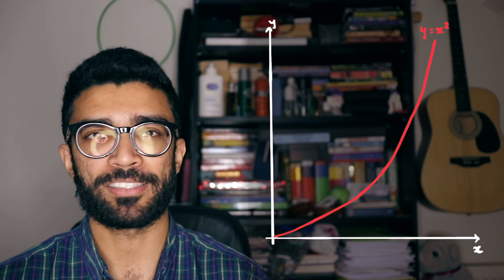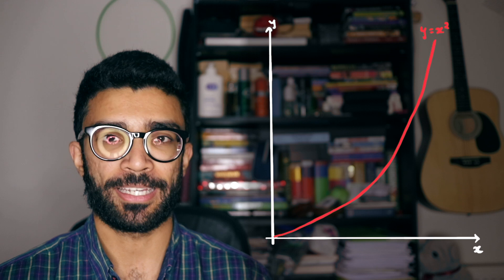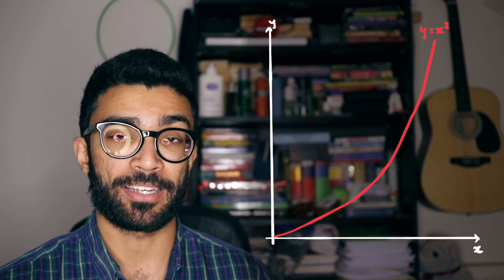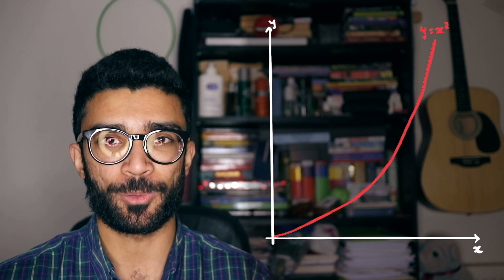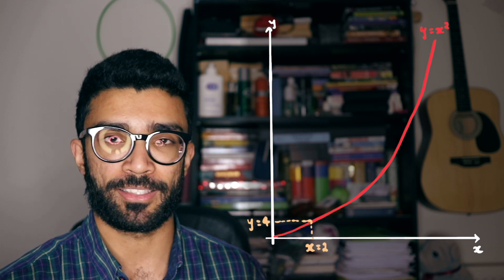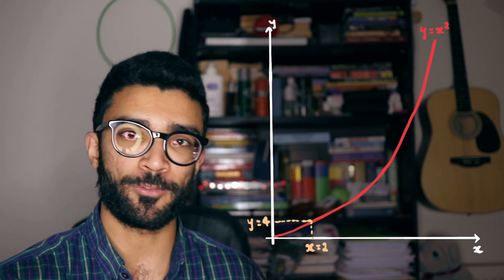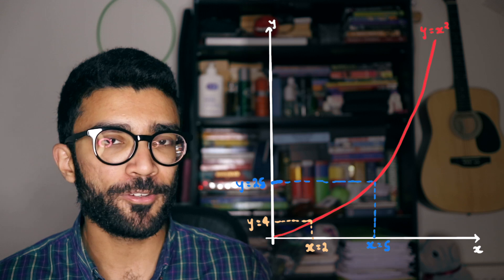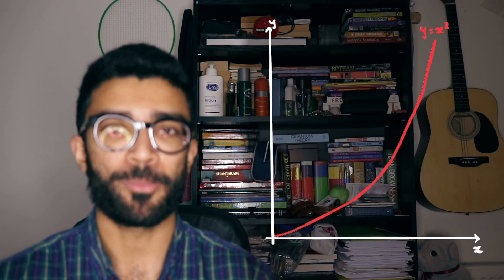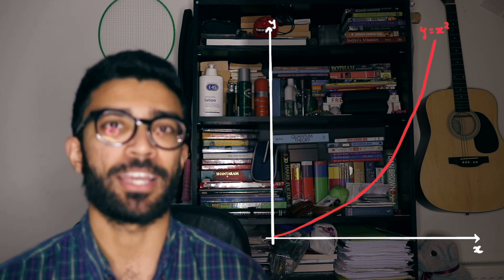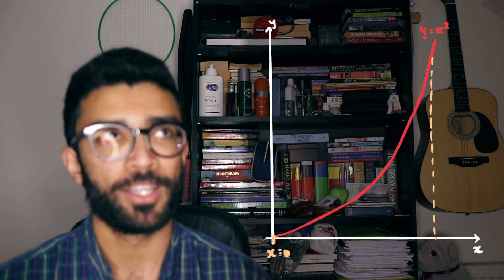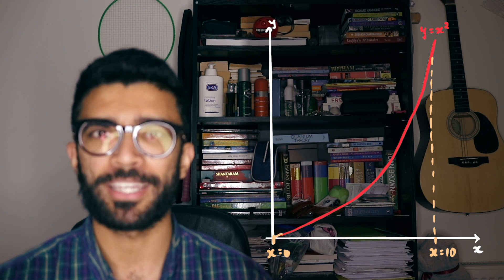This kind of stuff only works with relatively simple functions such as y equals x. What do we do in a situation where we've got a more complicated function? Let's say y equals x squared. This curve is defined such that whatever the x value is at a certain point, the y value is that x value squared. For example, at x equals 2, y equals 4; at x equals 5, y equals 25. Now let's try and find the area underneath the curve, above the horizontal axis, between x equals 0 and x equals 10 — we don't have a triangle anymore, so it's not quite as simple.